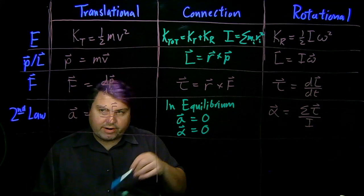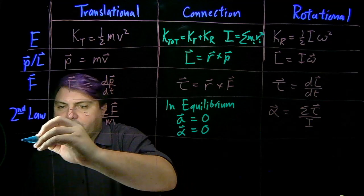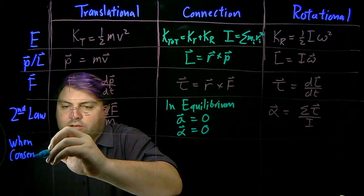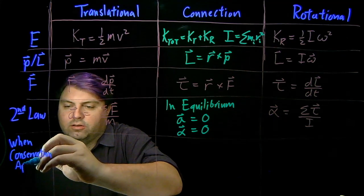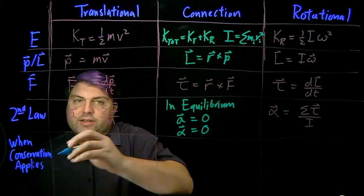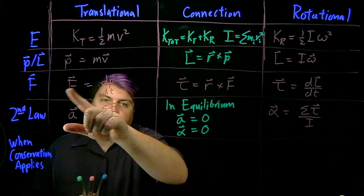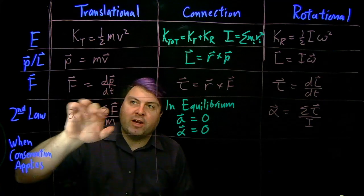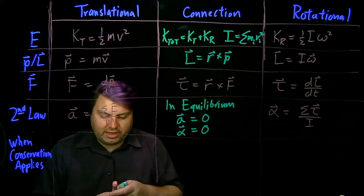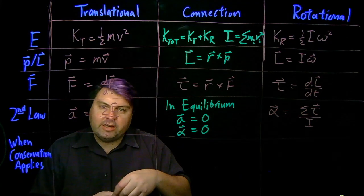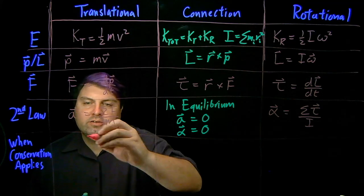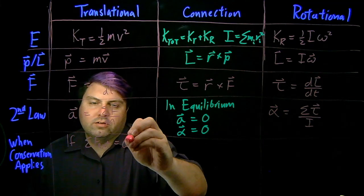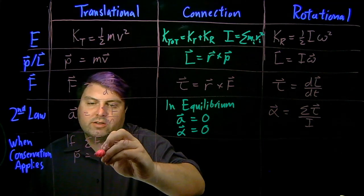And so our last thing is when things are conserved, when the conservation applies. So up here we had that the force was equal to the change in momentum over time. And for a system, any internal forces will cancel. So what we can say here is that if our external forces are zero,